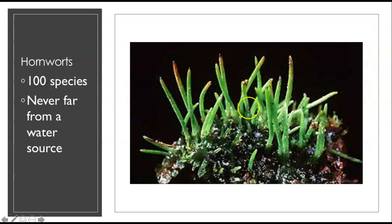Next are the hornworts, with only about 100 species. These are never far from a water source, which makes sense — similar to the first ever land plants, they wouldn't have gotten very far from water. So they need to be close to a water source.